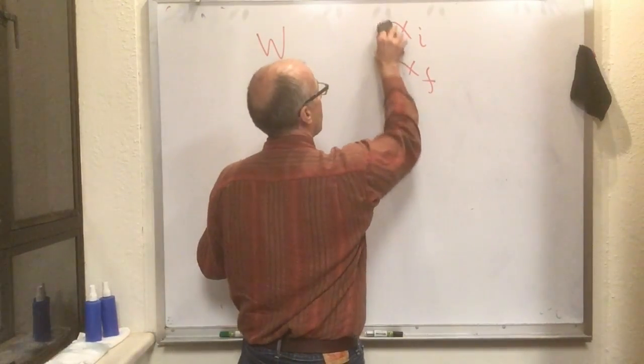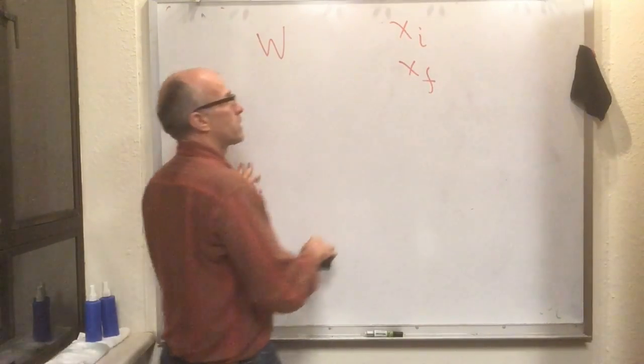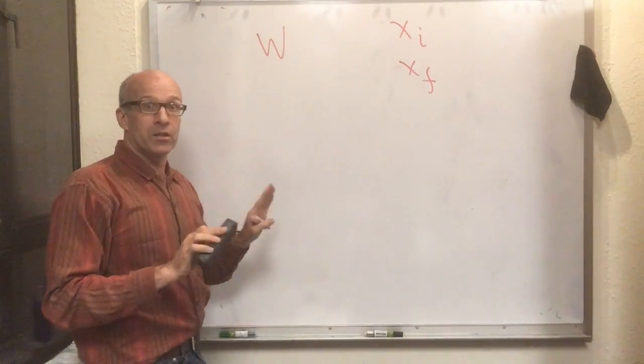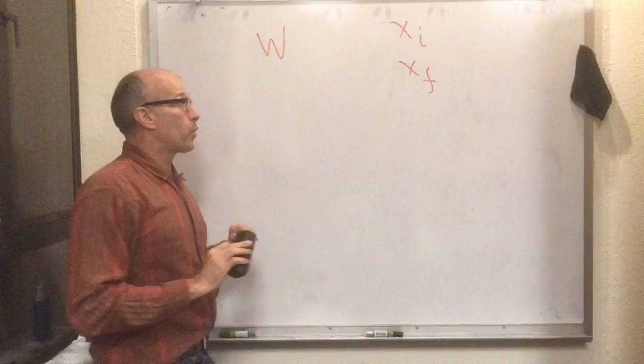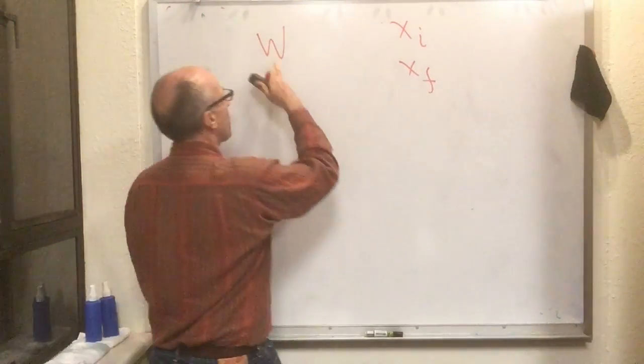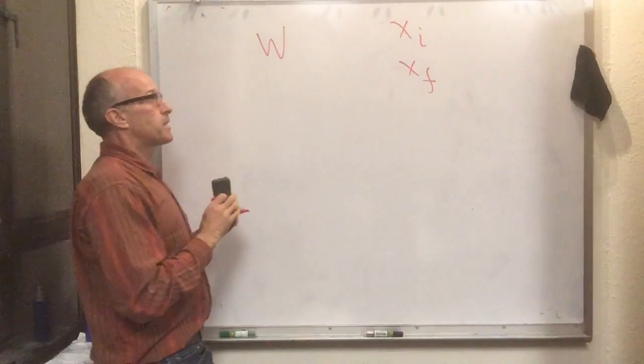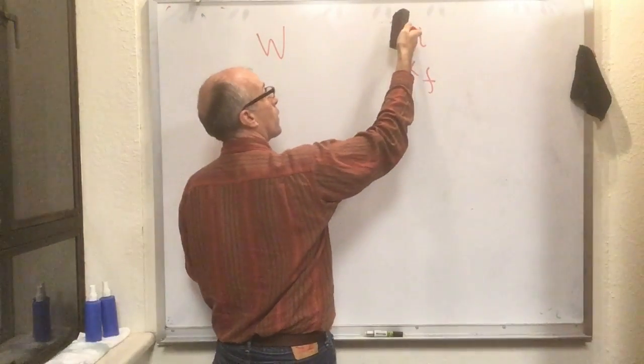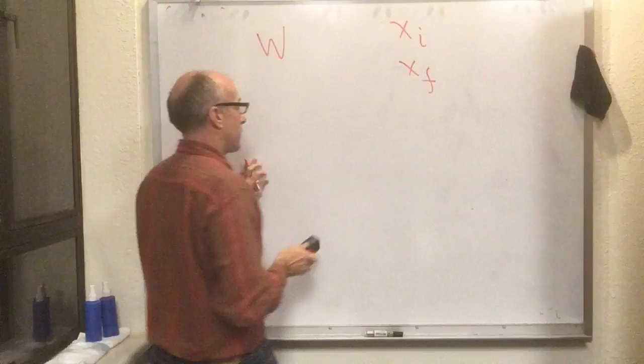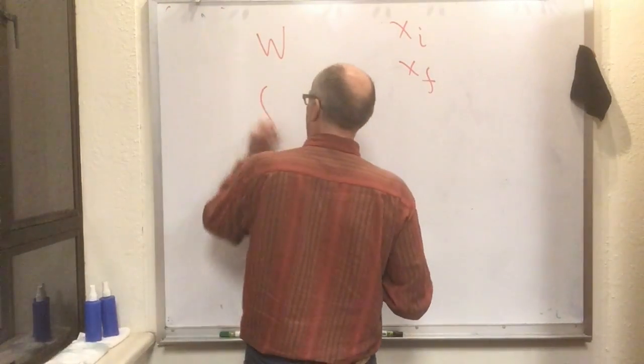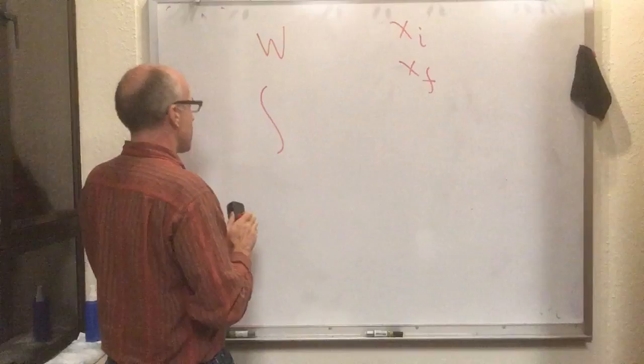That means I can drop all these deltas. X equals zero is going to correspond to the unstretched or uncompressed spring. Now let me restate the question: we want to find out how much work the spring does as it goes from x initial to x final.